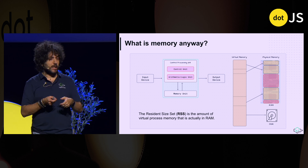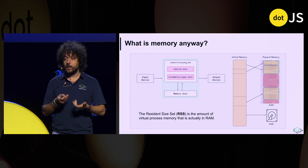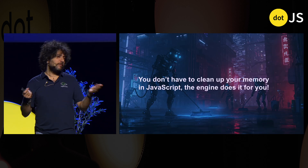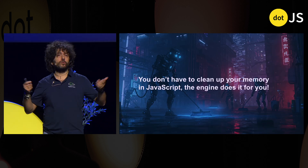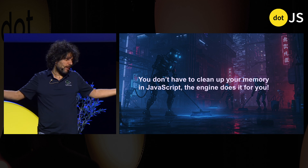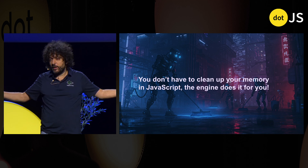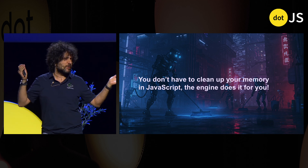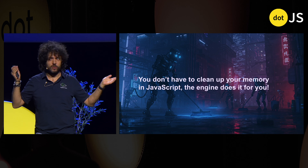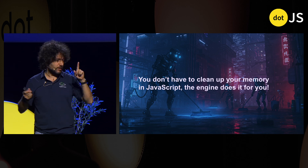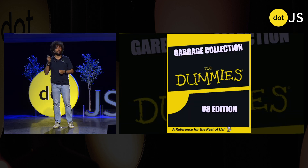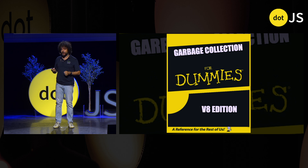Our process allocates data all the time on memory. In JavaScript, we don't have to manage memory at all — the engine cleans up memory for us. Or does it? Let's talk about garbage collection, V8 edition.